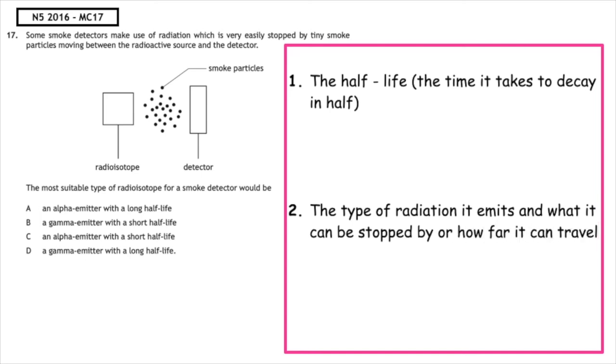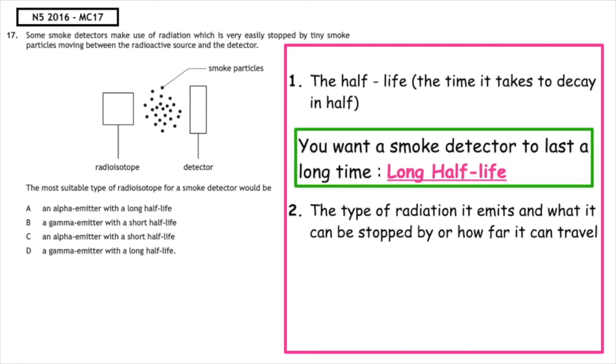So remember, when we are looking at uses of radioisotopes, the first thing that we have to look at is the half-life, and that's the time it takes to decay in half. We want the smoke detector to last a long time, so we would want it to have a long half-life. We then have to look at the type of radiation it emits and what it can be stopped by or how far it can travel.